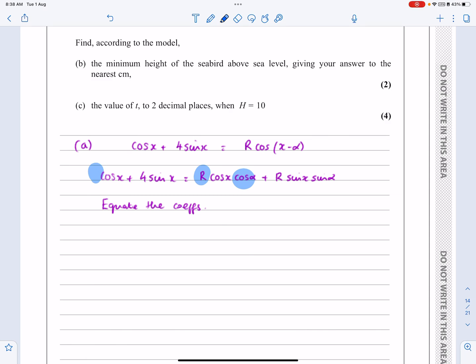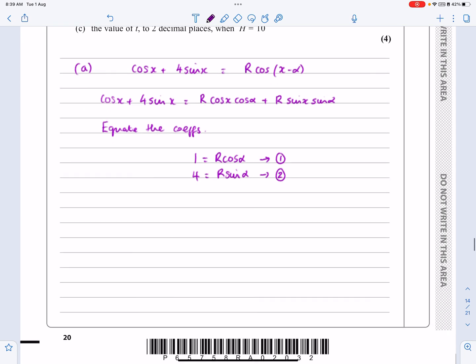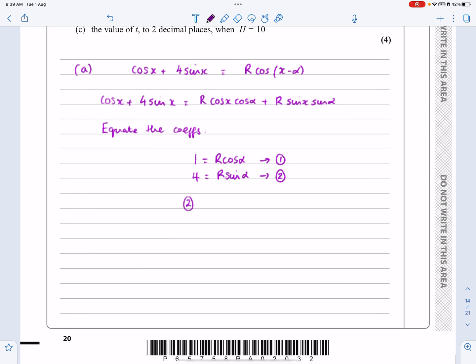So that must be the same as whatever is next to the cos x there. So in this case, that's going to give me 1 equals R cos alpha. And if I do the same principle here, 4 is going to be the same as what I'm multiplying by sin x on that side. So 4 works out to be R sin alpha. We always get very similar equations at this point.